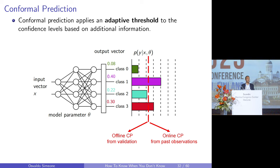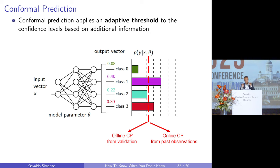Offline conformal prediction works as follows. You take your validation dataset, which you haven't used for training. You check the confidence level the model assigns to the true label for each example, and put all these confidence levels in a sorted list. You find a threshold such that a fraction 1 minus alpha of the largest confidence levels is above it. Then, for any new input, you include in the predicted set all labels whose confidence is above this threshold. It really is very few lines of code.